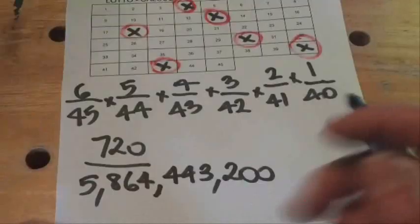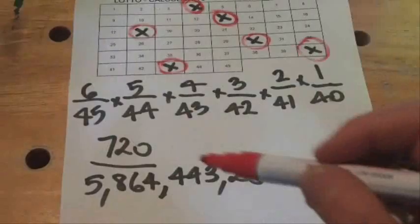What we want to do is express that as one chance in a certain amount. At the moment, we've got 720 chances in 5.8 billion, so we'll flip that fraction over to make it a ratio.